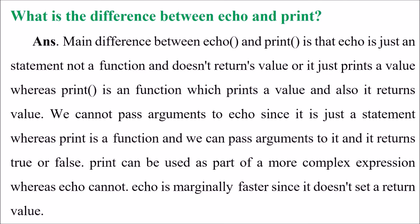What is the difference between echo and print? They are both similar, but the difference is that echo is just a statement, not a function. It doesn't return a value — it just prints a value. While print is a function which prints a value and also returns a value. We cannot pass arguments to echo since it is just a statement, while print is a function and we can pass arguments to it. Echo is marginally faster since it doesn't set a return value.